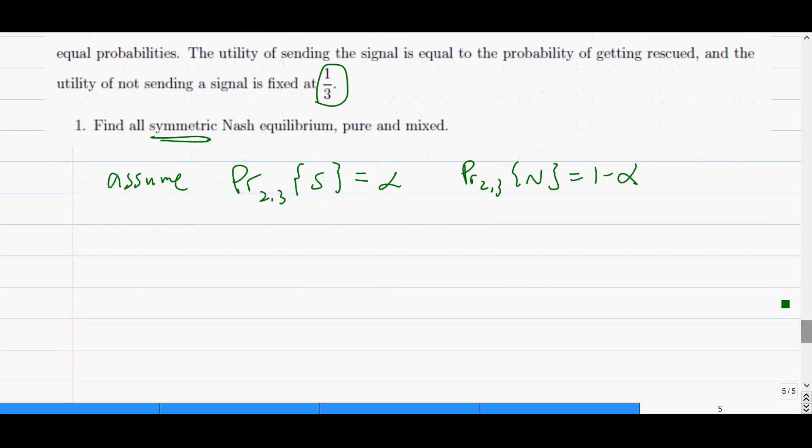So given this assumption, I can always calculate the payoff for me from sending and not sending. Not sending gives me a third as given in the question. The payoff from sending depends on what the other people are choosing. So the first case is the other people are both choosing to send. If I send then becomes SSS, then my probability of getting rescued becomes 1 over 3. And this event happening is with probability alpha times alpha.